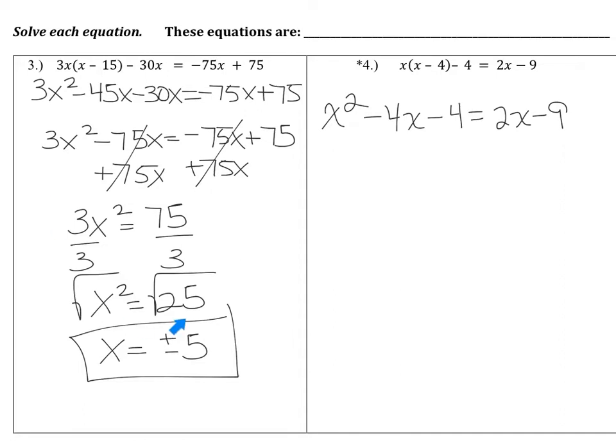This equation, because it has a squared variable and ends up having two solutions, is called a quadratic equation. The same is true for question number four. However, we run into a problem with question four — I didn't finish it because I wanted to discuss it.